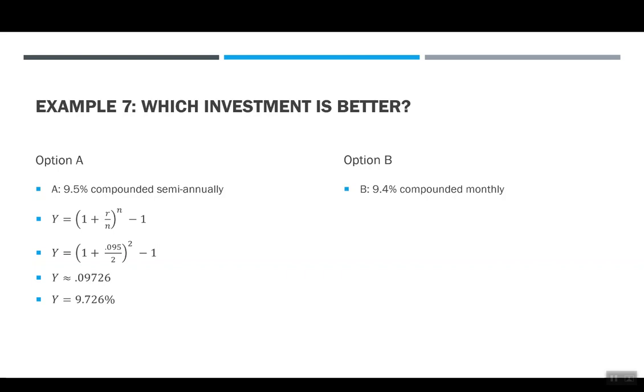Option B was 9.4%, but this time compounded monthly. So again, using my same Y, I have 1 plus 0.094 over 12 to the 12 minus 1. This gave me about 0.09816, or 9.816%. You can see by comparing when you're earning interest you want the higher percentage, so option B is better.